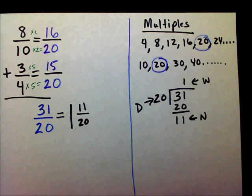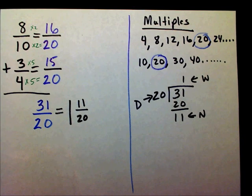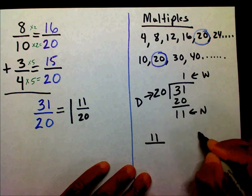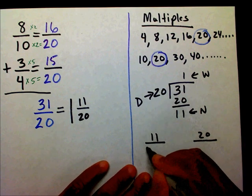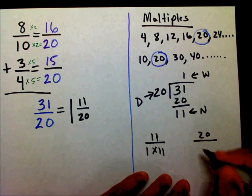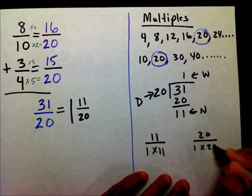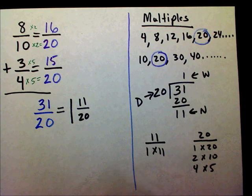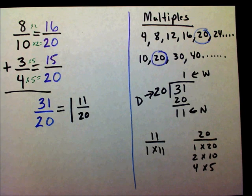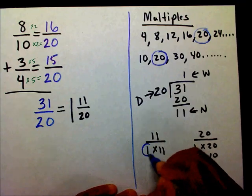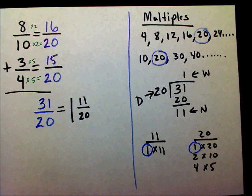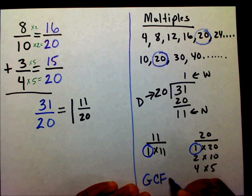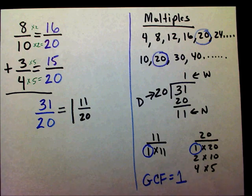Let me check if I can reduce that or if it's in its lowest terms. The factors for eleven are one and eleven. For twenty, you have one and twenty, two and ten, and four and five. They share only one in common, and I don't see eleven in the factors of twenty. So my greatest common factor is one, and therefore this is in lowest terms.